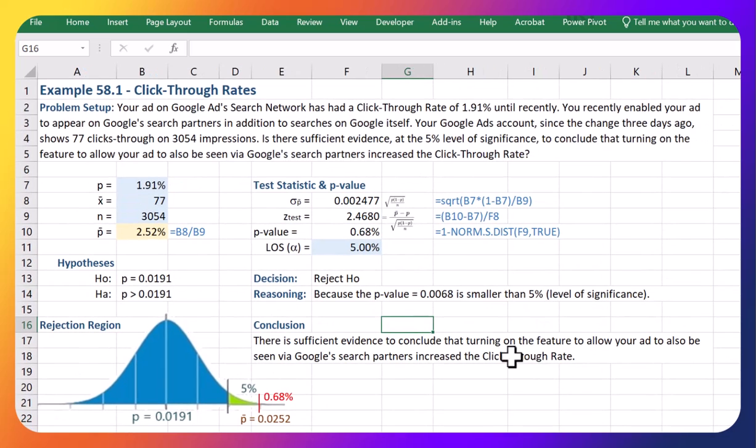And your conclusion is that there is sufficient evidence to conclude that turning on the feature to allow your ad to also be seen via Google search partners increased the click-through rate. Okay thanks for watching, that now concludes this example.